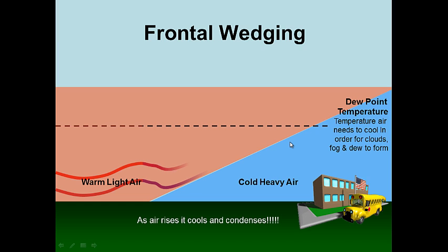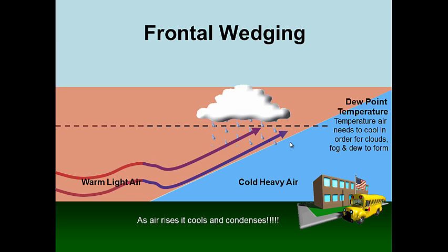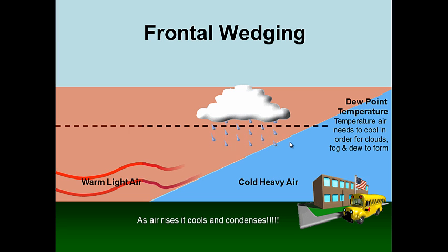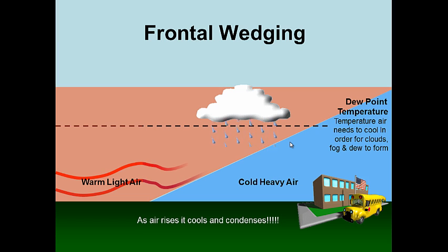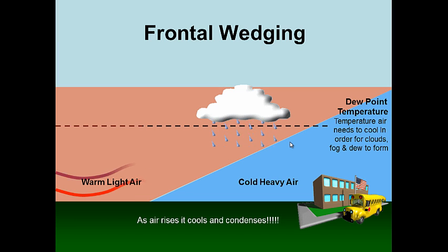Frontal wedging is one of the main ways we get storms and clouds. You may have heard weathermen say we have a cold front coming through. These fronts consist of two different air masses: warmer, lighter air hits cold, heavy air and rises over it — they don't mix. The warmer, lighter air is forced upward over the colder, heavy air, and once again it hits the dew point temperature and we get clouds.